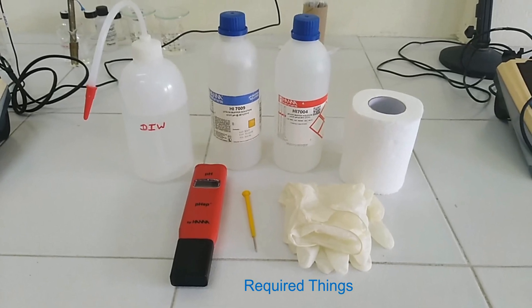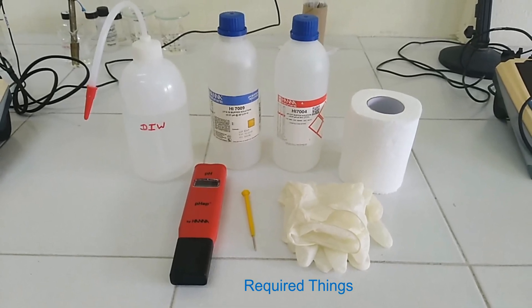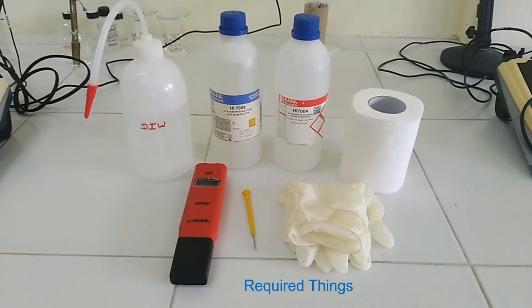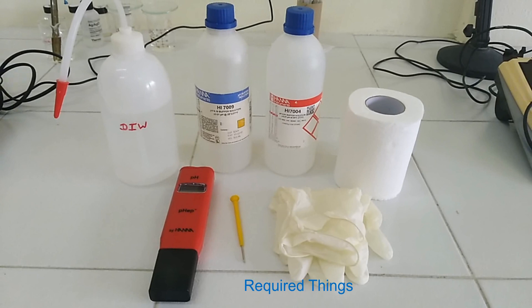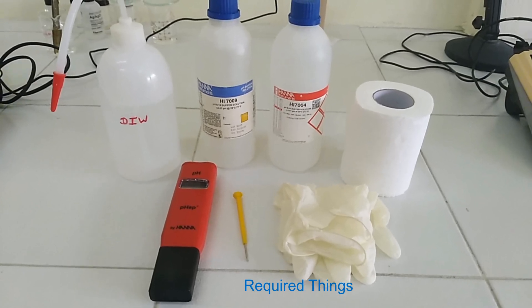Here is pen type pH meter of HANA, buffer solution of pH 7.01 and 4.01, screwdriver, lint-free DC paper, deionized or distilled water, gloves, apron, etc.